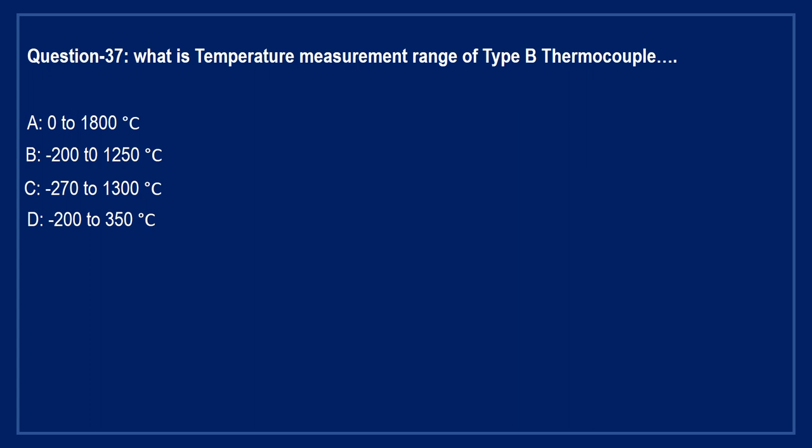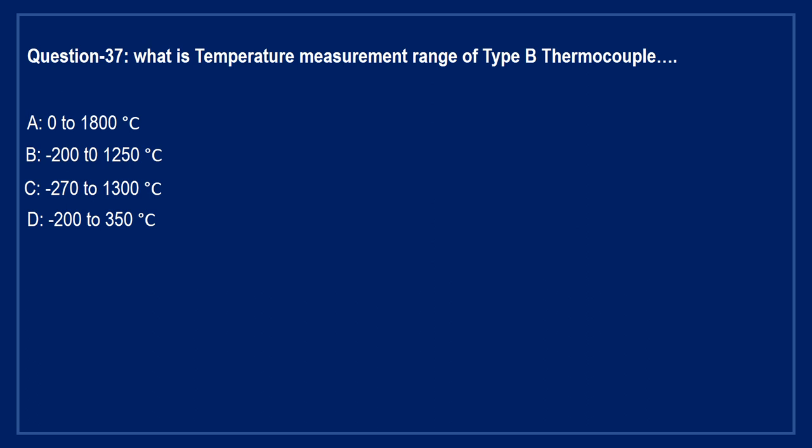Question: what is the temperature measurement range of type B thermocouple? Option A: 0 to 1800°C. Option B: minus 200 to 1250°C. Option C: minus 270 to 1300°C. Option D: minus 200 to 350°C. The right answer is Option A — type B thermocouple can be used for 0 to 1800 degree centigrade.